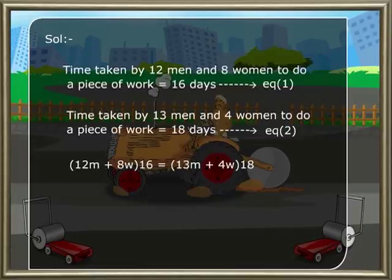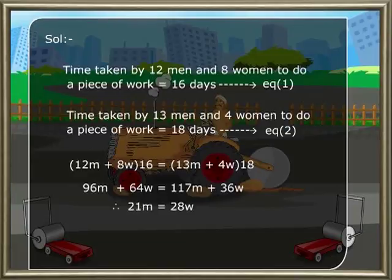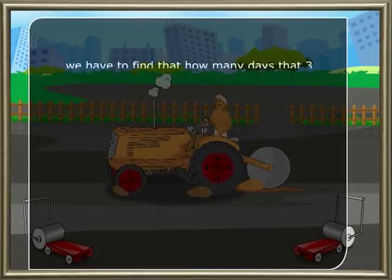So (12M + 8W) × 16 = (13M + 4W) × 18, giving 96M + 64W = 117M + 36W. Solving: 21M = 28W, therefore M = (28/21)W. This is equation three.